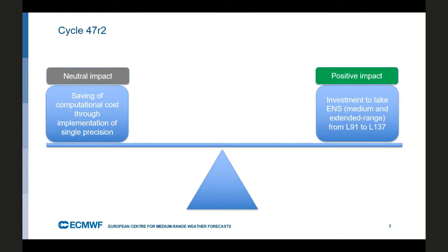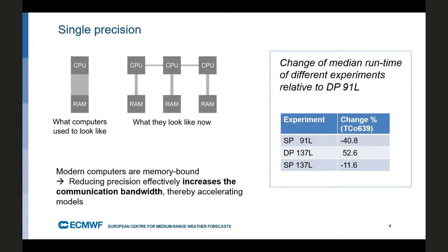The implementation of single precision is de facto neutral in terms of forecast scores — it's a computing time saving. The increase in levels in the ensemble is a positive impact on ensemble scores. This idea goes back to a research project done together with Oxford University, with our AI coordinator Peter Düben and former ECMWF fellow Tim Palmer. It was tested first in OpenIFS, then introduced into the IFS. The work was carried out in close collaboration with Météo France, which also successfully used single precision in global simulations.